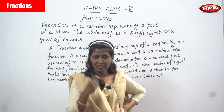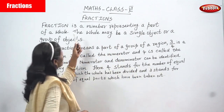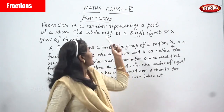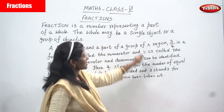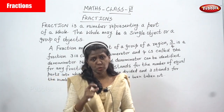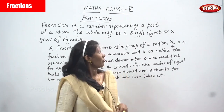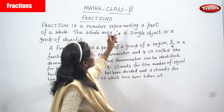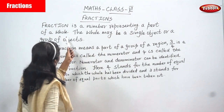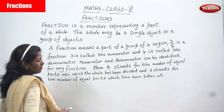Fraction is a number representing a part of a whole — part of a whole. The whole may be a single object or a group of objects. That means fraction is nothing but a part of a whole. Fraction is a number representing a part of a whole; the whole may be a single object or a group of objects.